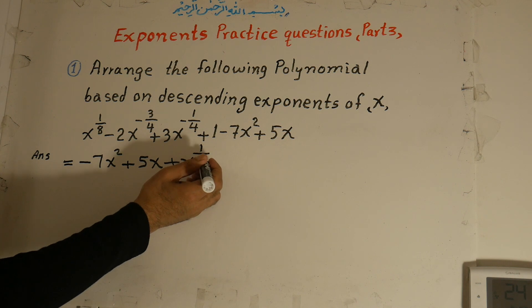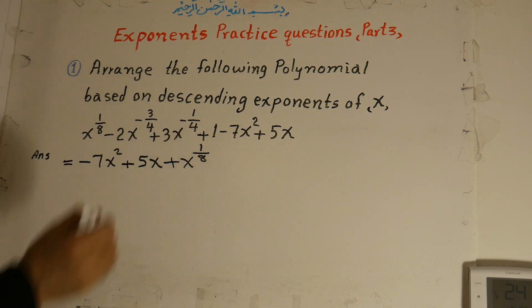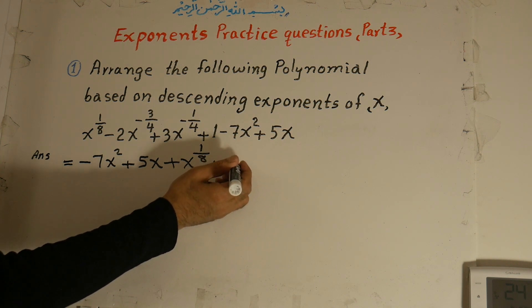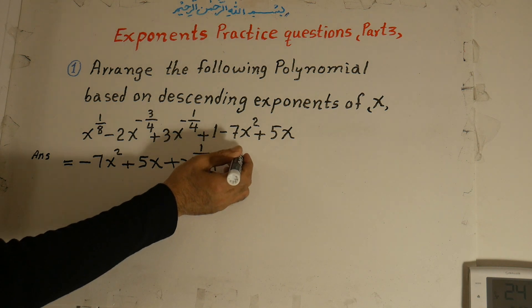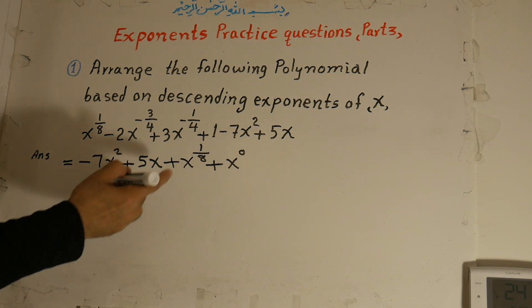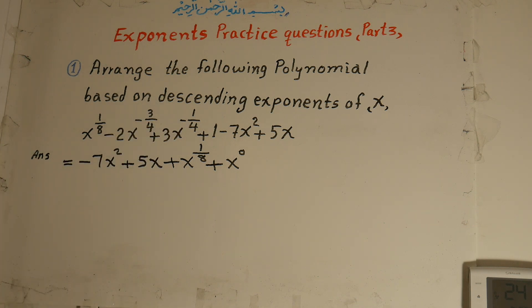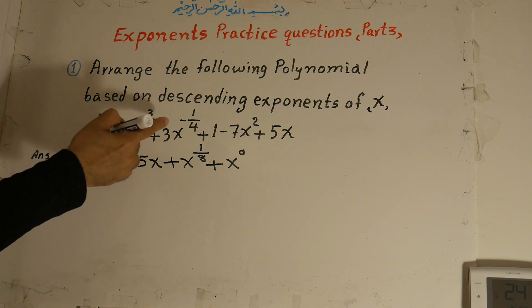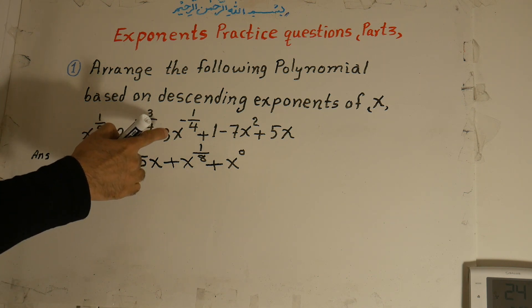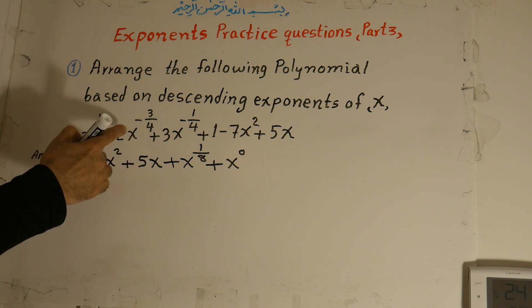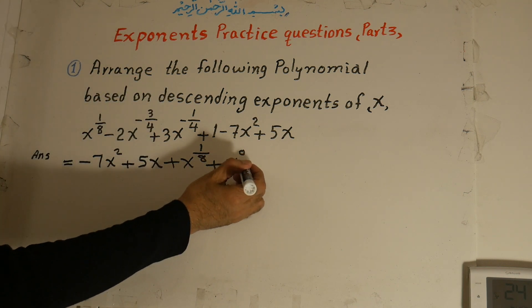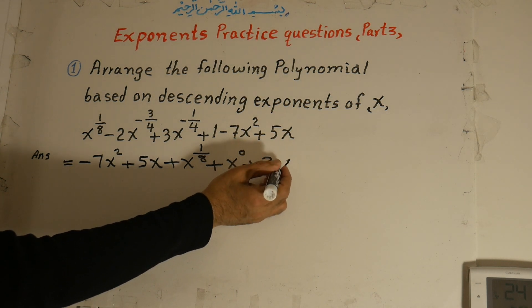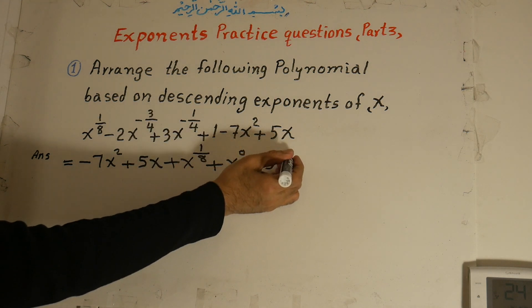Then 1, which is x to the power of 0. We know from previous lessons that any number to the power of 0 is 1. Because we are discussing the power of x, 1 equals x to the power of 0. And after that, the smallest negative is the largest and the biggest negative is the smallest. So plus 3x to the power of negative 1 over 4.